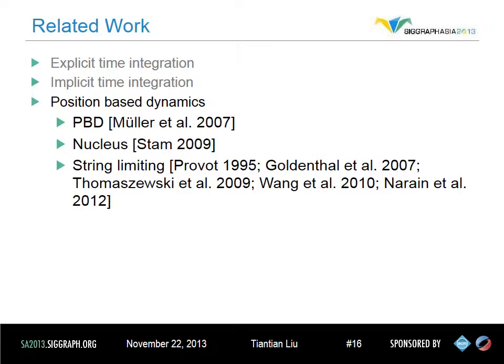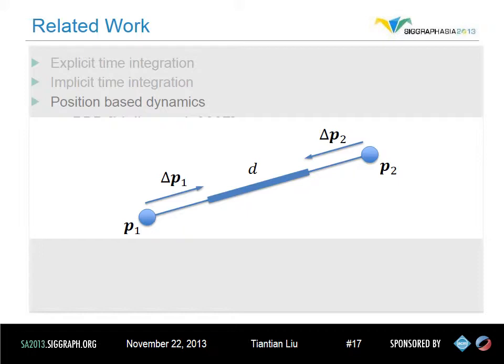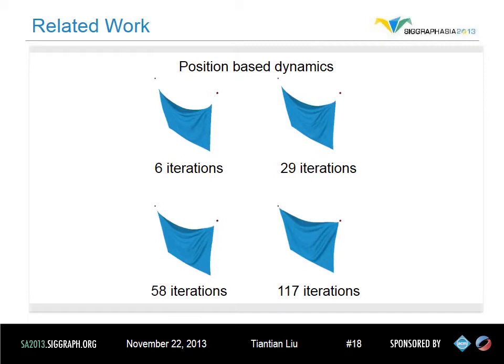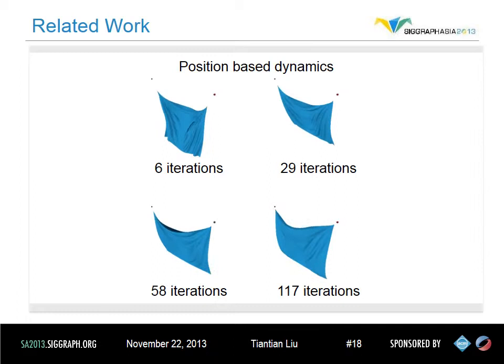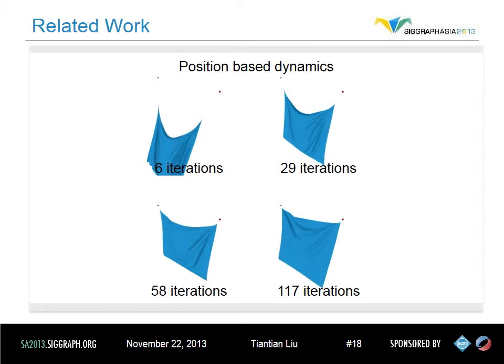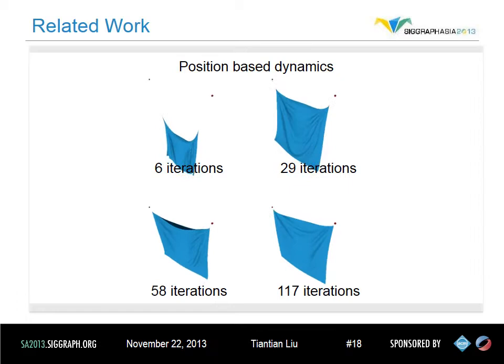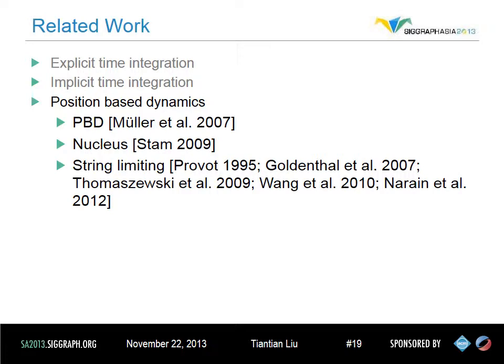Another interesting alternative to classical force-based physics is position-based dynamics. For example, PBD projects the vertices back towards rest configurations and iterates over the entire system using a Gauss-Seidel fashion. However, this kind of approach does not take correct material properties into account. It can be worse when iterations are terminated far from convergence — in these cases, material property is highly dependent on number of iterations. Lower number of iterations will make the material look stretchier. Also, many papers involving strain limiting share a similar idea of this position-based approach.